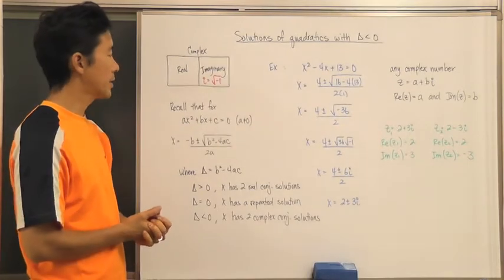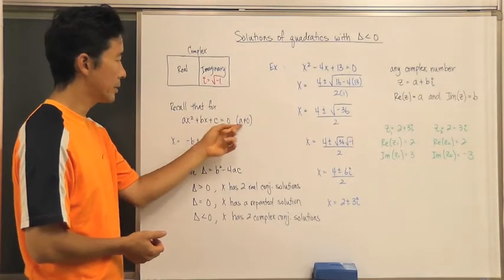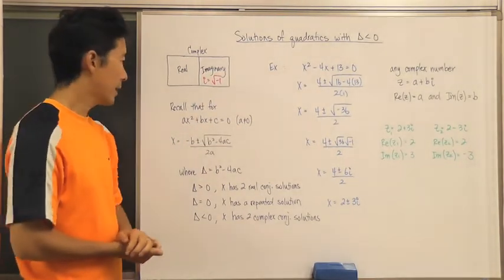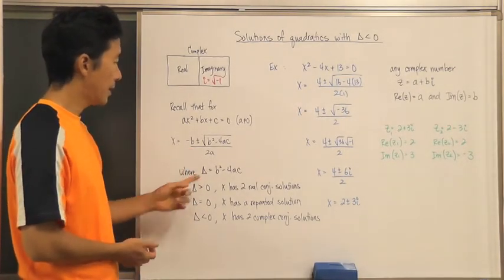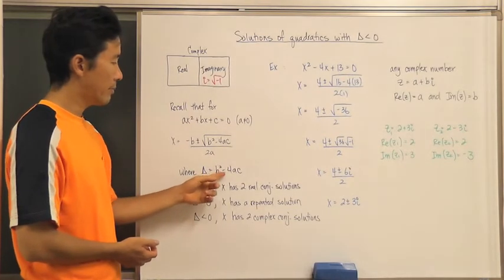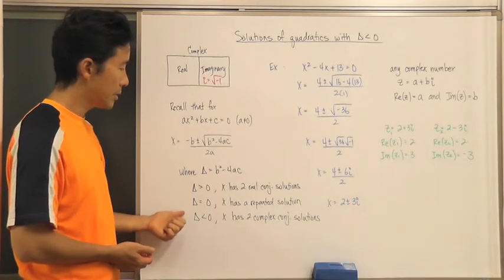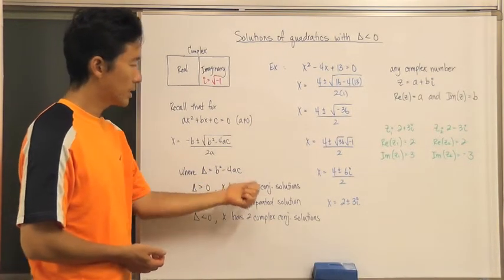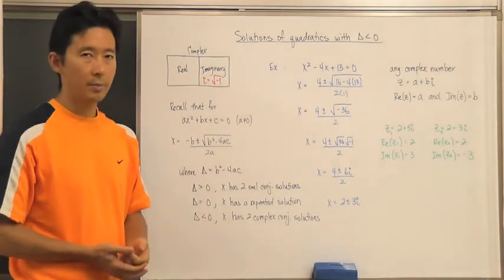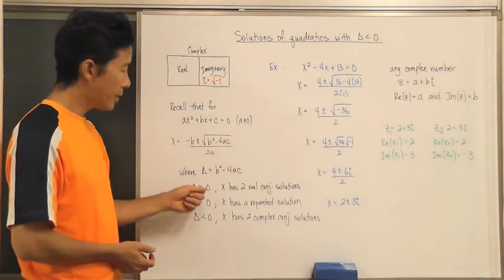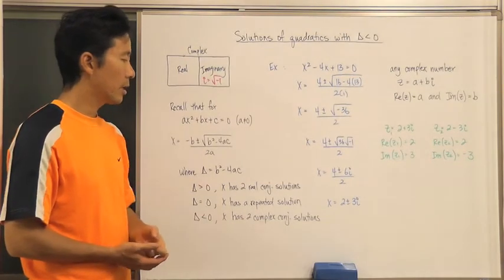Let's look at our quadratic: ax squared plus bx plus c equals zero, where a is not equal to zero. To solve it, we can always use the quadratic formula, and the discriminant is b squared minus four ac. There are three situations that tell us what type of solutions and how many solutions we get based on the value of the discriminant. If the discriminant is greater than zero, then the quadratic has two real conjugate solutions.